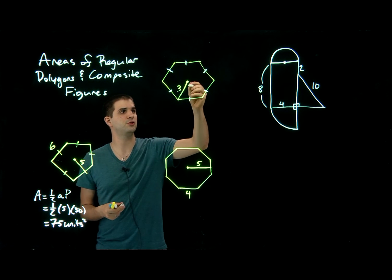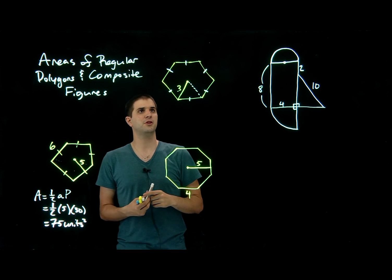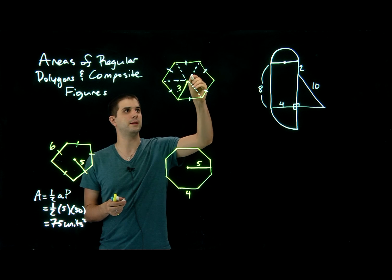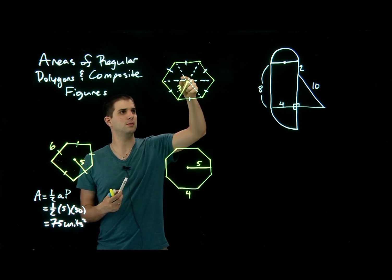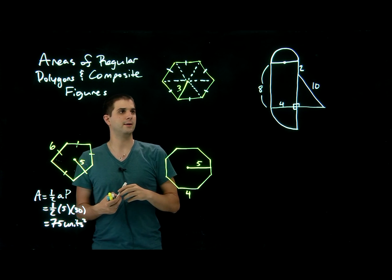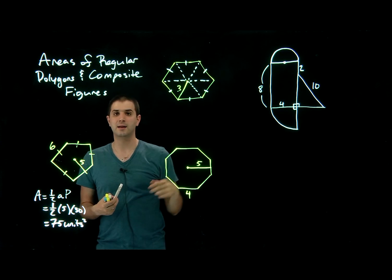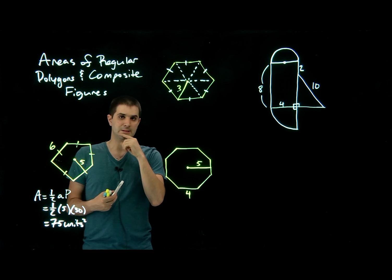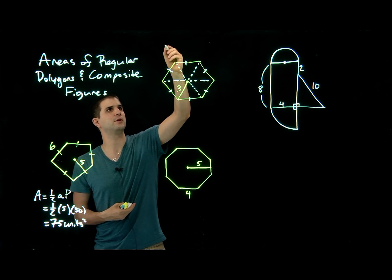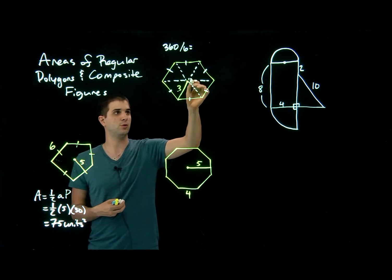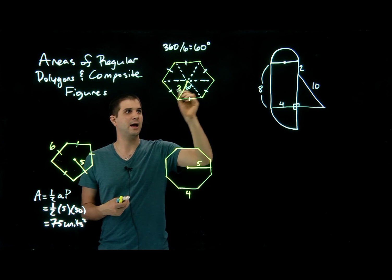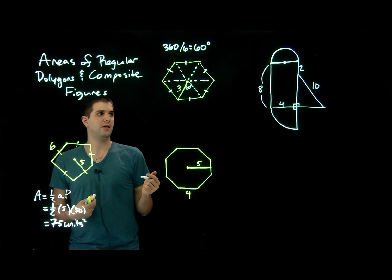I would encourage you to draw in this triangle, and then think about how many triangles there are total in this regular hexagon. It looks like there are 6. If this is all 360 degrees, and all the radii are equal and all the sides of the polygon are equal, then all of these triangles are congruent. So all these central angles must be congruent as well — 360 degrees divided by 6 gives 60 degrees per angle.